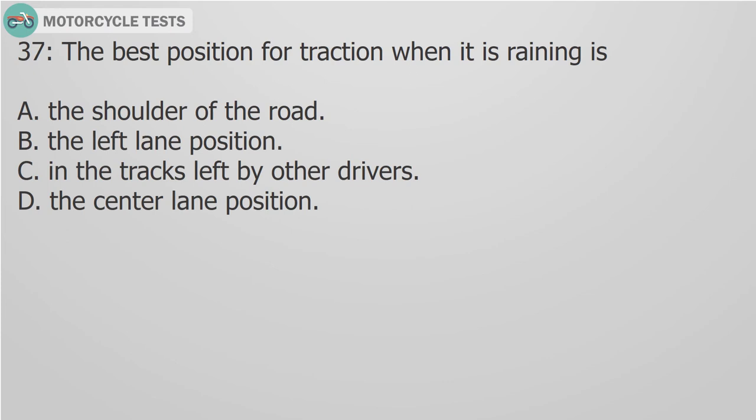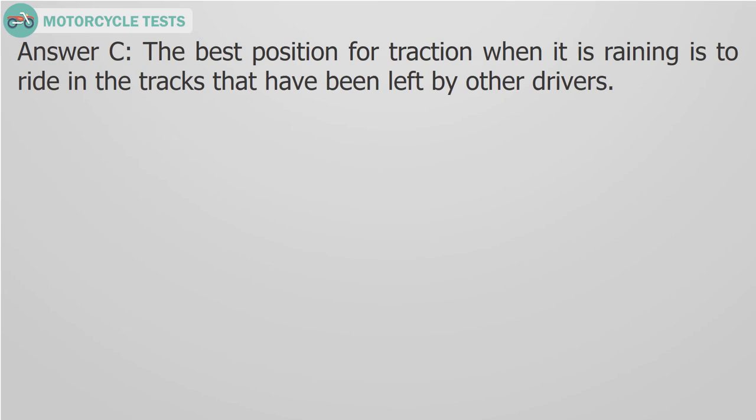Question 37. The best position for traction when it is raining is: A. The shoulder of the road. B. The left lane position. C. In the tracks left by other drivers. D. The center lane position. Answer C. The best position for traction when it is raining is to ride in the tracks that have been left by other drivers.